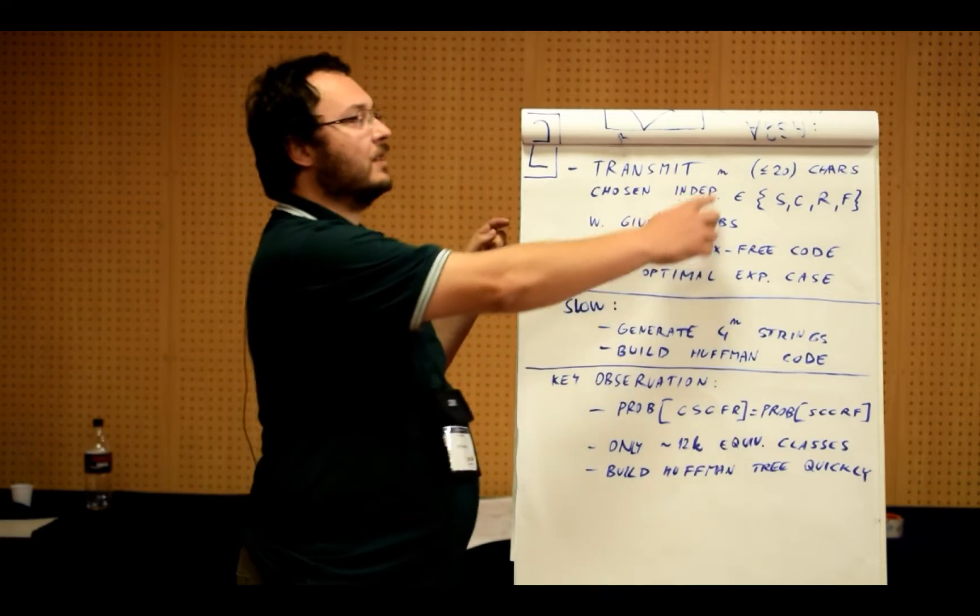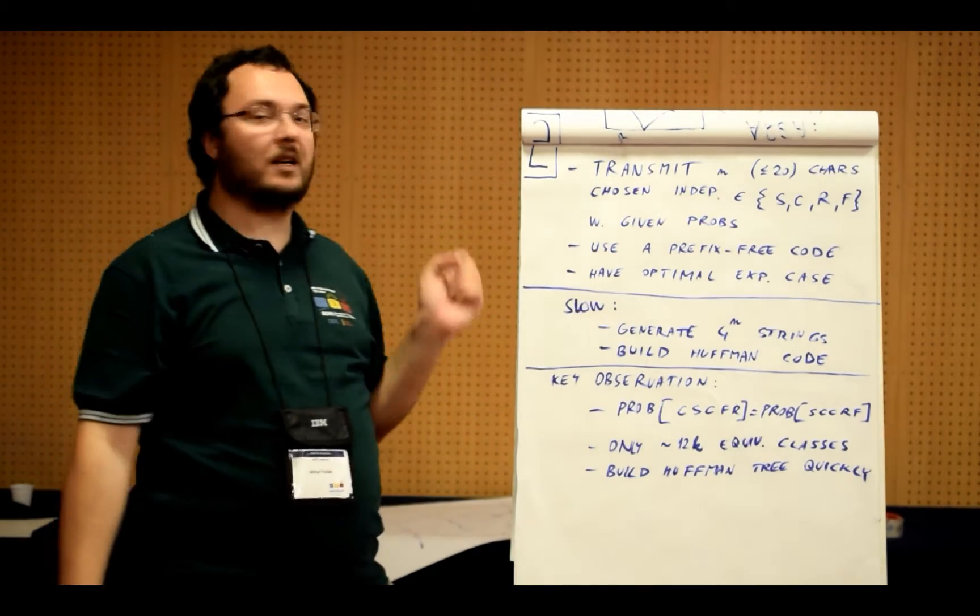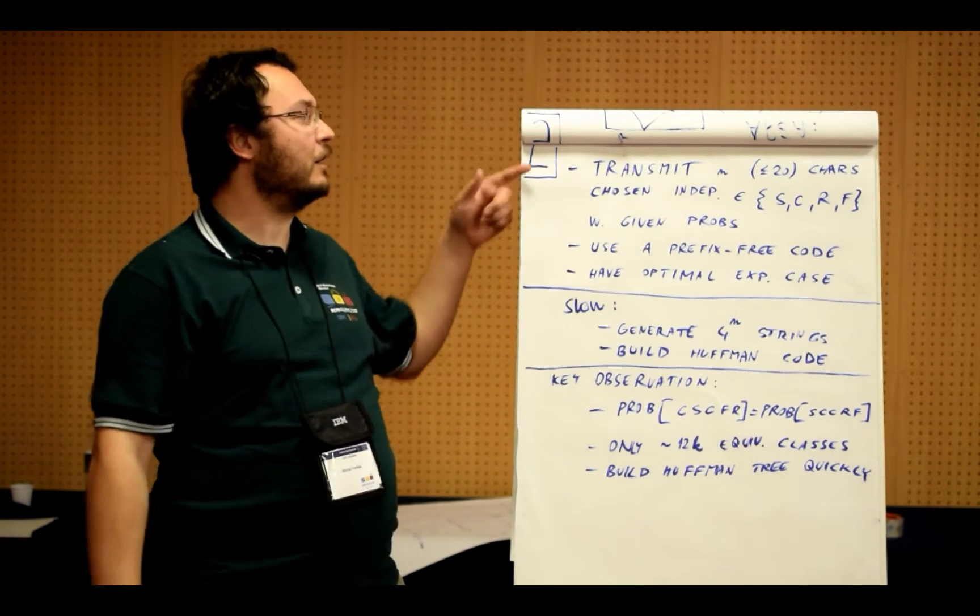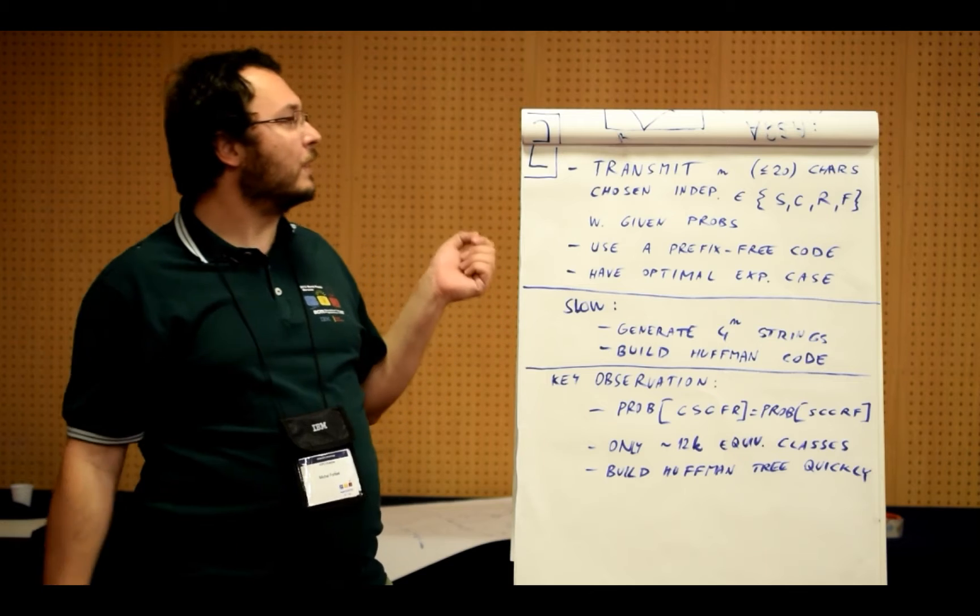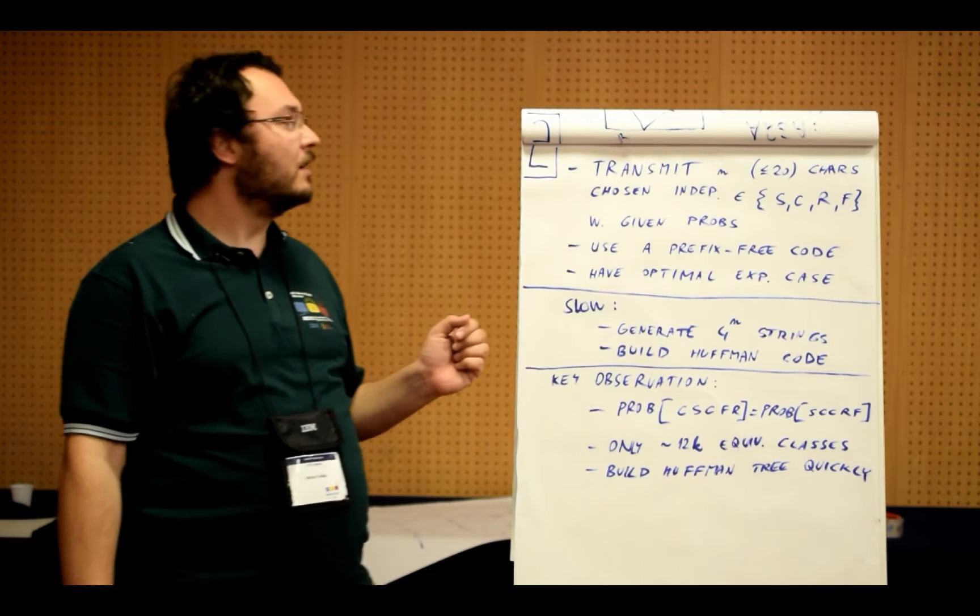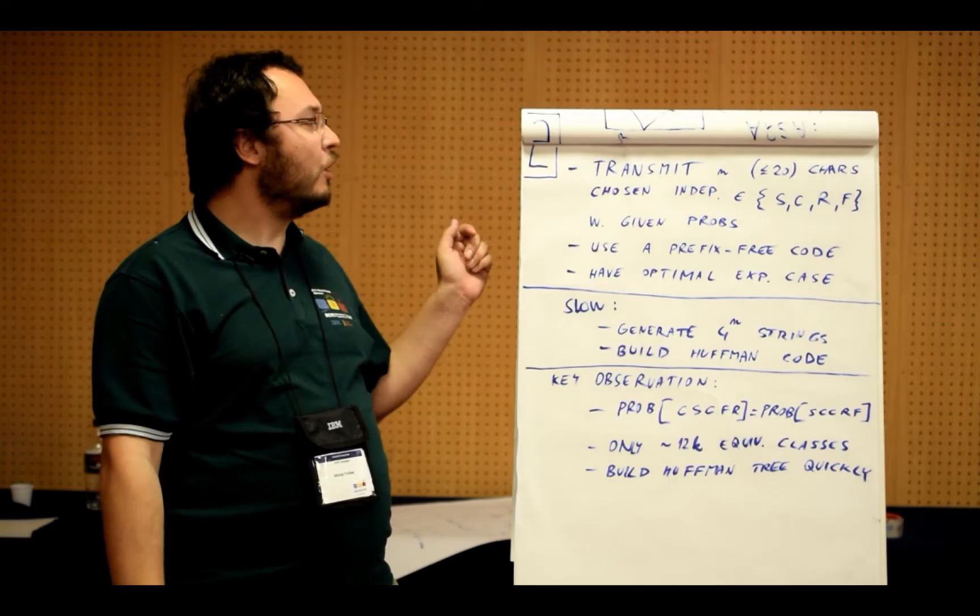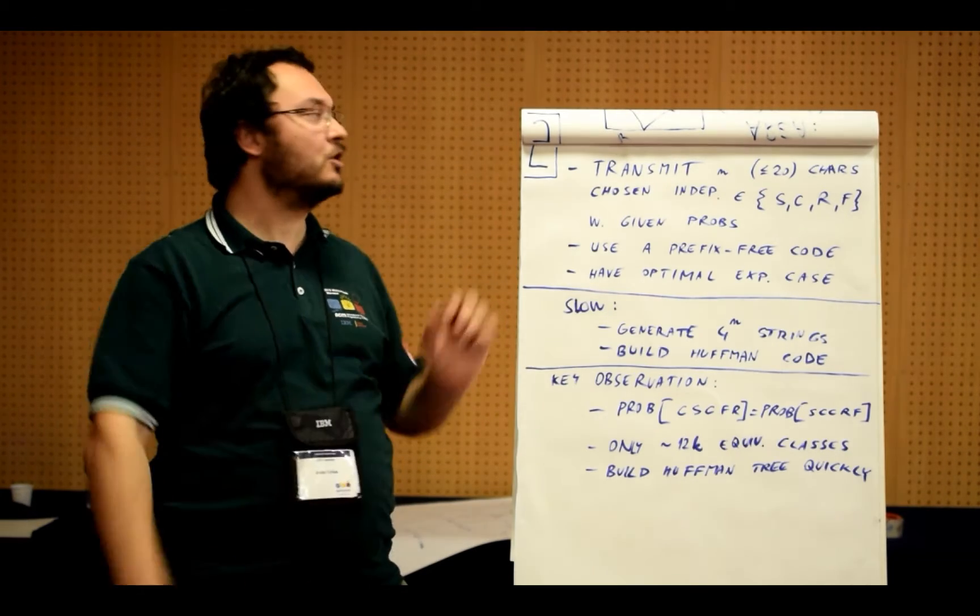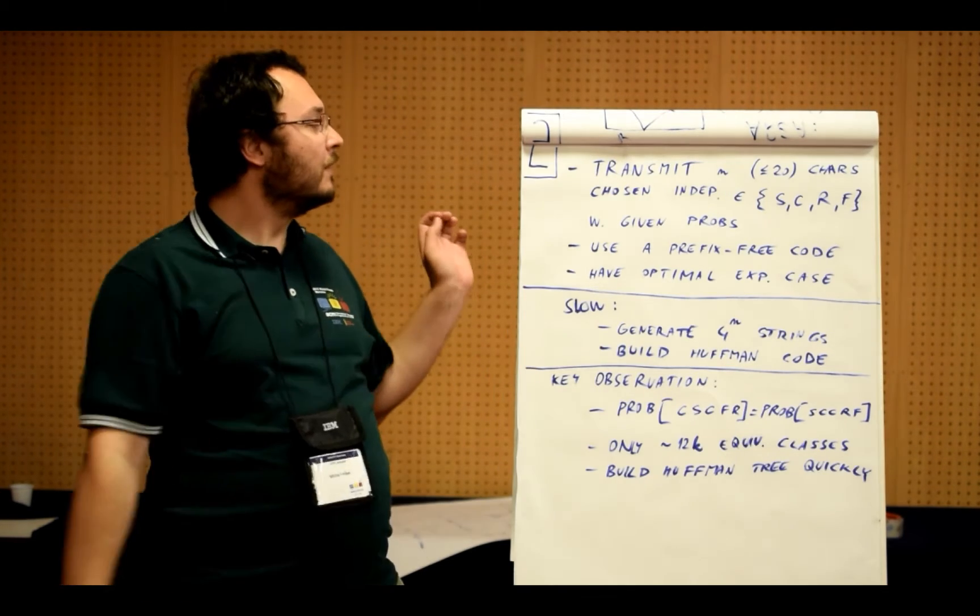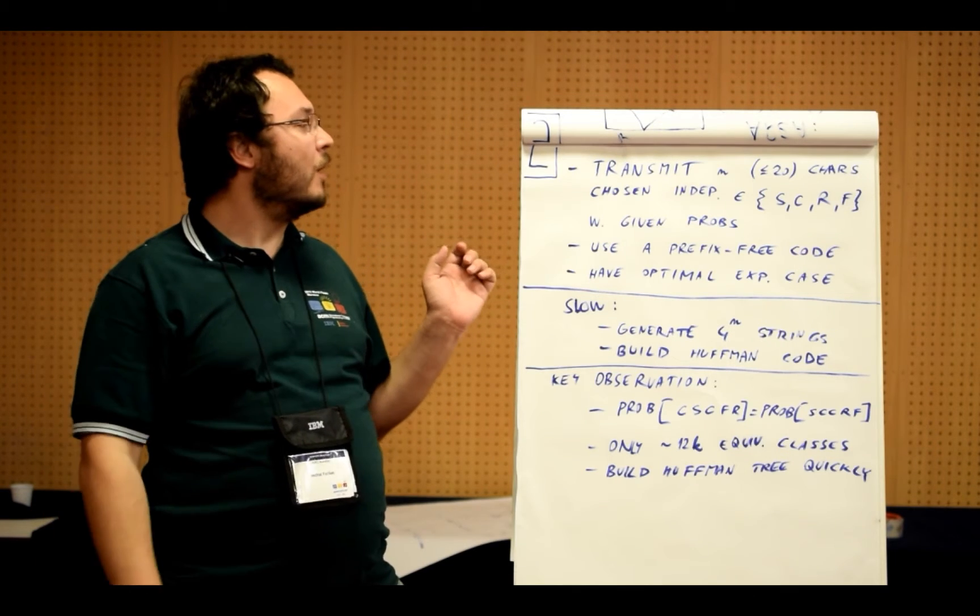The input for this problem is just the number n and the four probabilities. The task the contestants are given is that you know in advance you are going to be transmitting this sequence of n characters generated using the following rules, and you want to transmit the sequence using the smallest number of bits possible. More precisely, you have to construct a prefix-free code, so the codes of different messages, different strings of length n, have to be such that neither of them can be a prefix of another code, and also the expected length of your encoding has to be optimal.